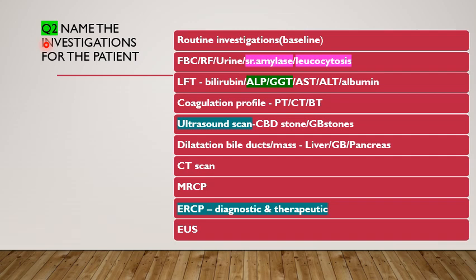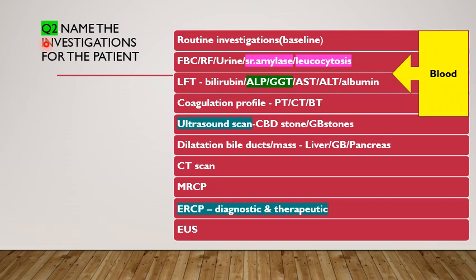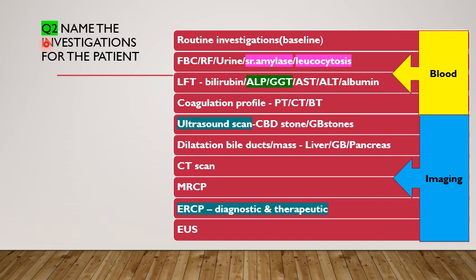There are two groups of investigations for this patient. First is blood investigations, and the second group is imaging investigations. Among the blood investigations, this includes routine investigations as baseline and the most specific ones: serum amylase and leucocytosis to diagnose pancreatitis and evidence of infection. This includes full blood count, renal function, and urine analysis. The next is liver function test, which includes bilirubin — direct and indirect — alkaline phosphatase, GGT, and the liver enzymes. Also clotting time and bleeding time.